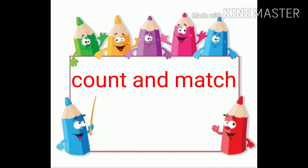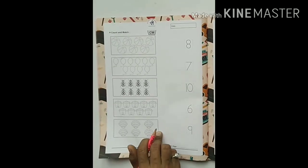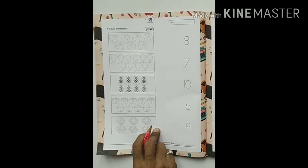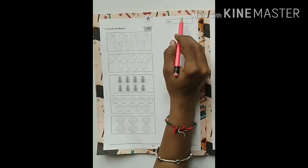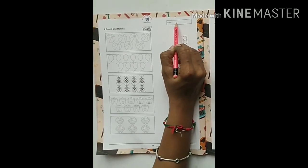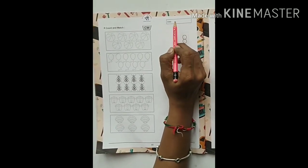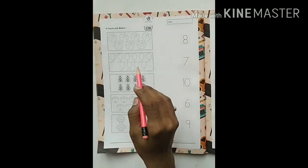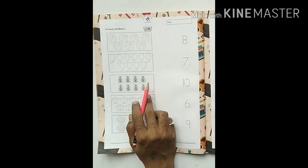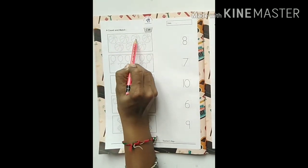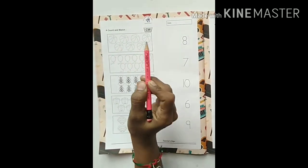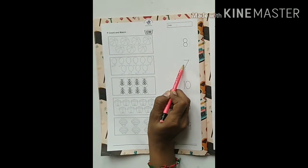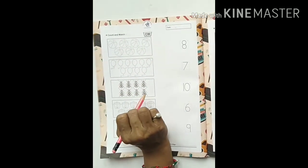Now we will do count and match. Here we have count and match activity. But first in this box, we have to write the date. Always you have to write the date. Now what we have to do? We have to count objects and match with the correct number. Let's start.